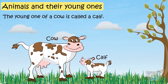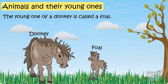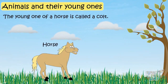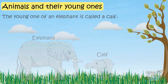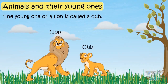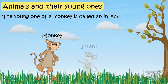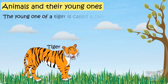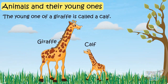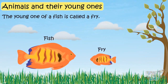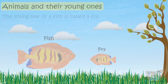An owlet is the young one of an owl. A joey is the young one of a kangaroo. A kid is the young one of a goat or a rabbit. A fawn is the young one of a deer. A lamb is the young one of a sheep. A calf is the young one of a cow. A foal is the young one of a donkey. A colt is the young one of a horse. A calf is the young one of an elephant. A cub is the young one of a lion. An infant is the young one of a monkey. A calf is the young one of a giraffe. A fry is the young one of a fish.